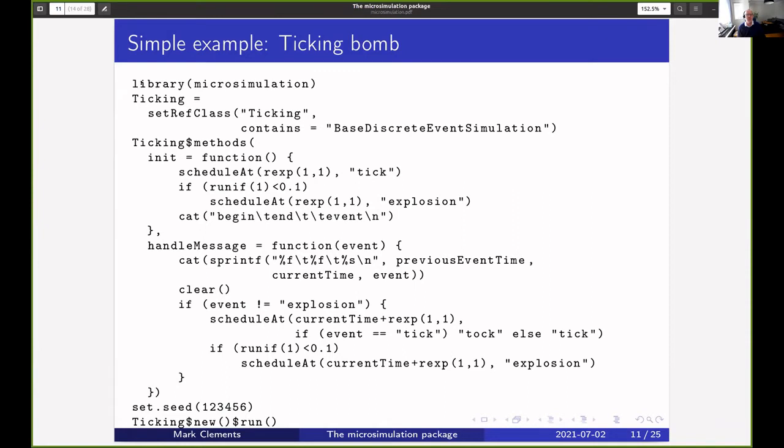What we do is we install from CRAN and then use the microsimulation package. Then we define a reference class called Ticking which uses the base discrete event simulation class. We have to define this here. Then for that class we define two methods. We've got init which schedules a tick at an exponential time, then it does a coin toss to see whether there's an explosion, and then it does some reporting.